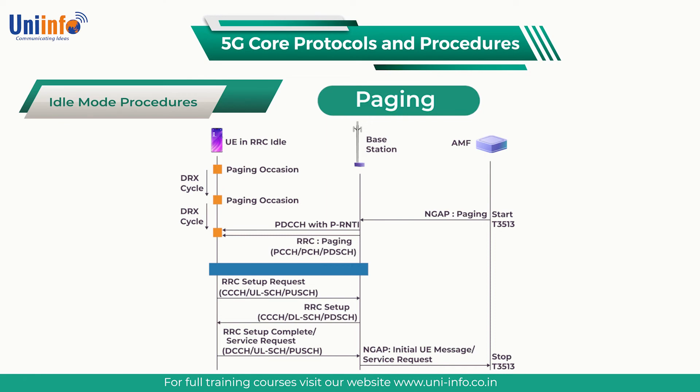Alternatively, a user plane function (UPF) may have received downlink data addressed to a UE currently in RRC idle. In that case, the UPF notifies the SMF that downlink data has arrived, and the SMF requests the AMF to initiate the paging procedure. The UPF can subsequently forward the downlink data to the base station once the UE has entered RRC connected.